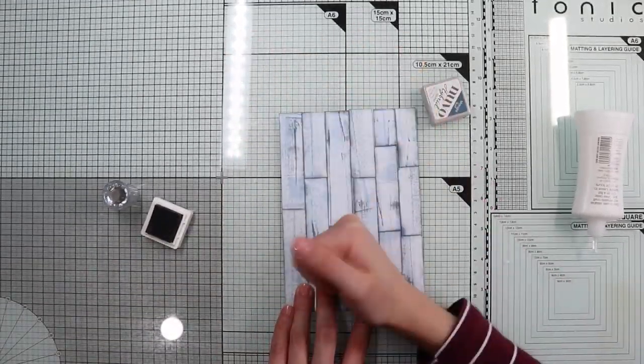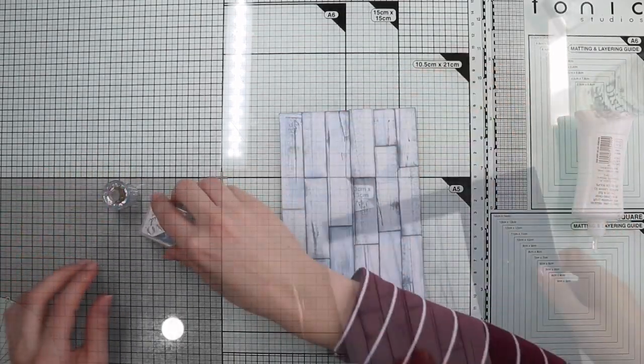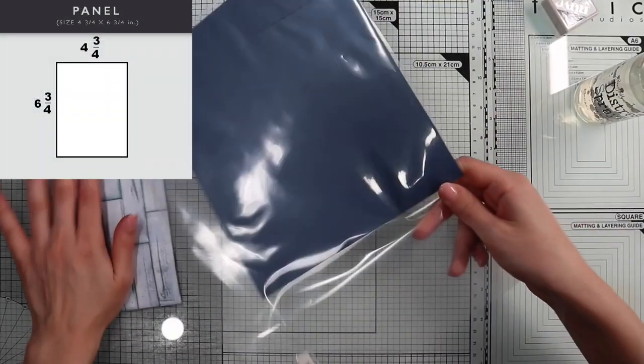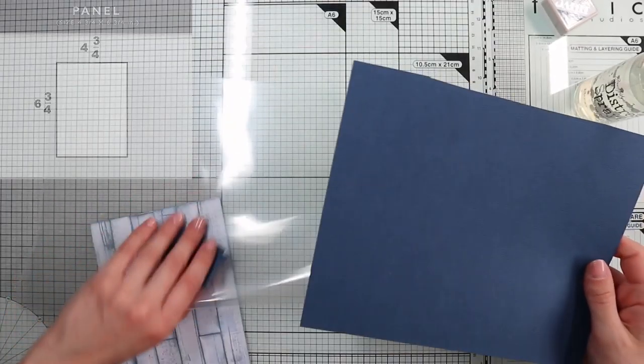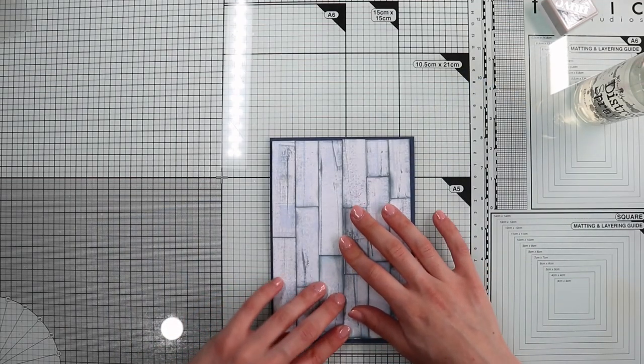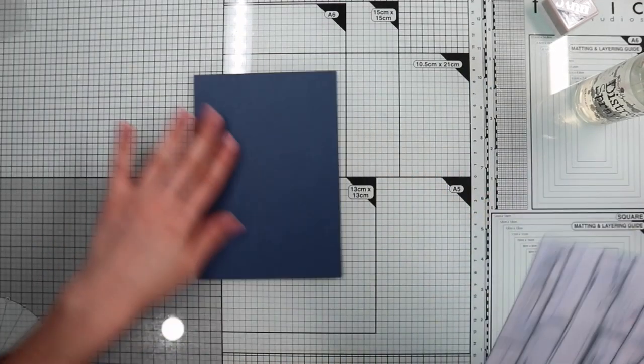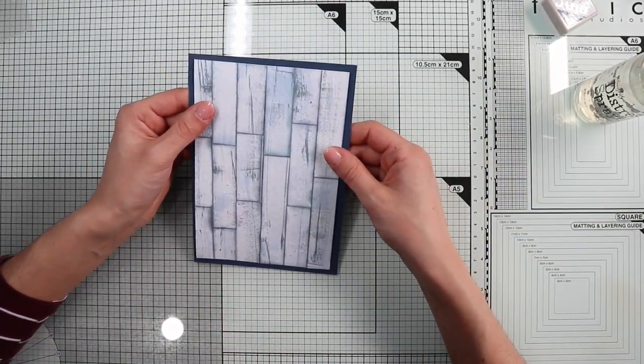Perfect. I love the wooden planks effect. Before moving on to the background, I cut out a 4 and 3 quarter by 6 and 3 quarter inches panel on navy blue paper, which will create the finishing edges. I slightly shrink the background panel and then define the edges with dark blue ink.